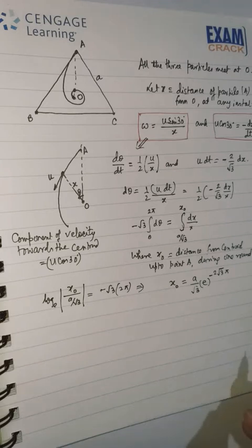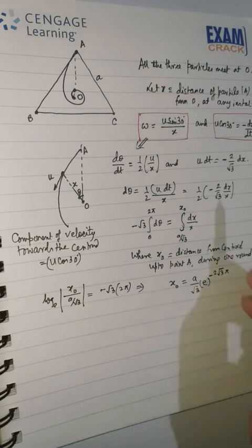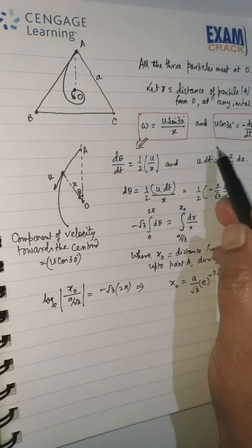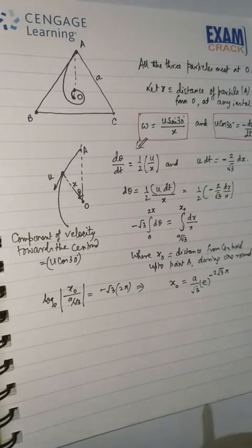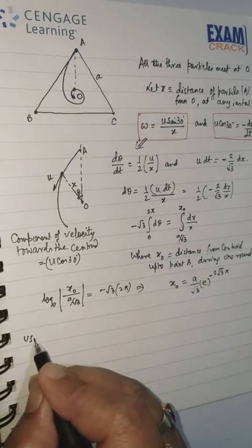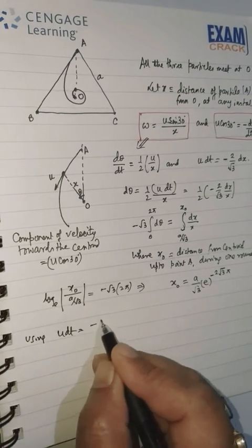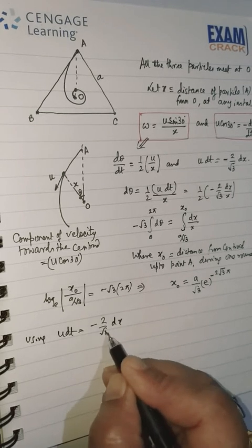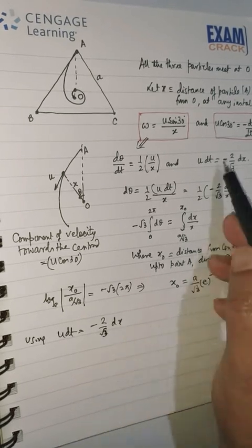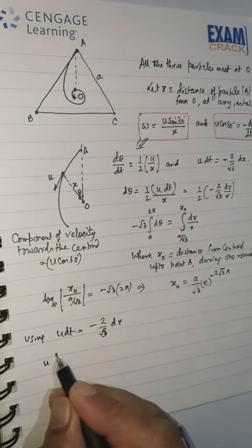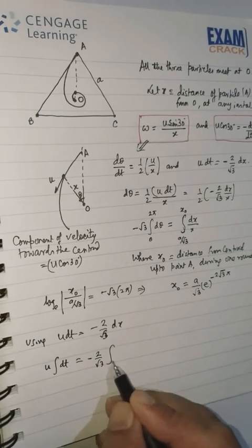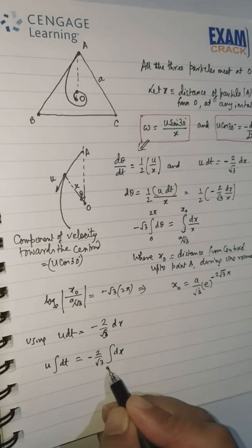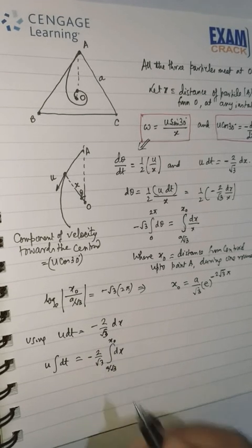Now, we need to find out the time it takes to reach that particular point. How to find out time? You have already seen U dt equals this. From there, we arranged in this way. And we found x₀ using U dt equals minus 2/√3 dX. So upon integration, U is constant. U integration of dt equals minus 2/√3 integration of dX, where X initial value is A/√3 up to x₀.